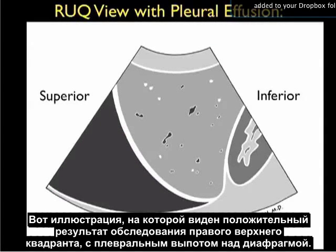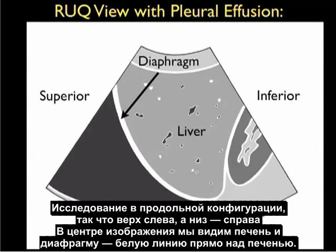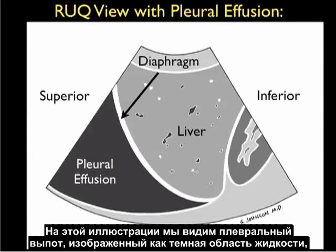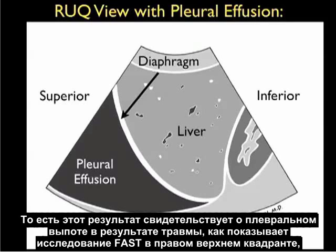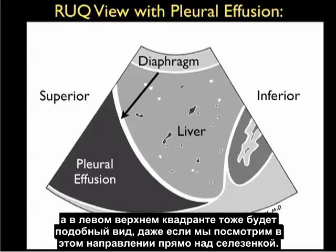Here's an illustration showing a positive examination from the right upper quadrant view with a pleural effusion above the diaphragm. We're in that long axis configuration, so superior to the left and inferior to the right. We see the liver in the middle of the image and the diaphragm — the white line — right above the liver. Notice in this image we have a pleural effusion represented by the dark area of fluid immediately superior to the diaphragm, tucking in right above the diaphragm and going up into the thoracic cavity. This will be the signature finding of a pleural effusion from the trauma fast views, with the left upper quadrant offering a similar view above the spleen.